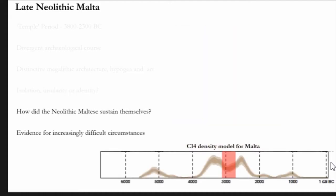But another very important question in the Maltese context is how did they manage to maintain this complex culture of megalithic building, especially whenever we know that these people are up against increasingly difficult circumstances. The radiocarbon evidence you can see here, the density models, really reflect this fluctuation in human activity and these difficult circumstances.